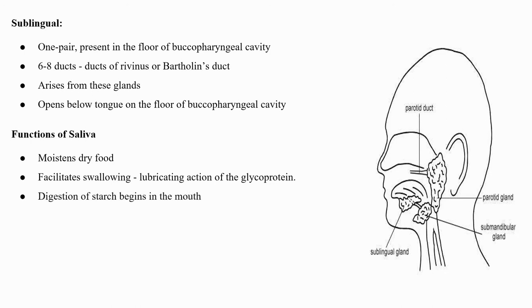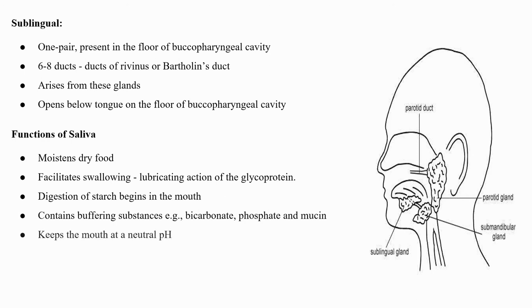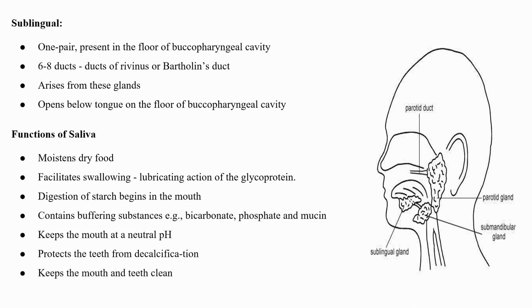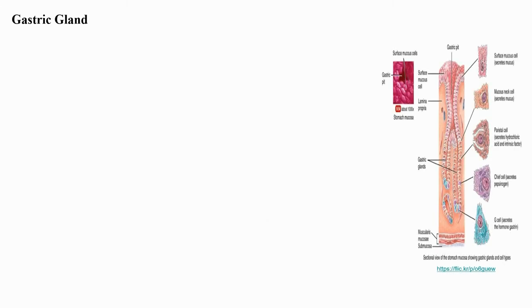Functions of saliva: saliva moistens dry food and facilitates swallowing by the lubricating action of glycoprotein. The digestion of starch begins in the mouth. Saliva contains buffering substances — bicarbonate, phosphate, and mucin — which keep the mouth at a neutral pH, protecting the teeth from decalcification and keeping the mouth and teeth clean.